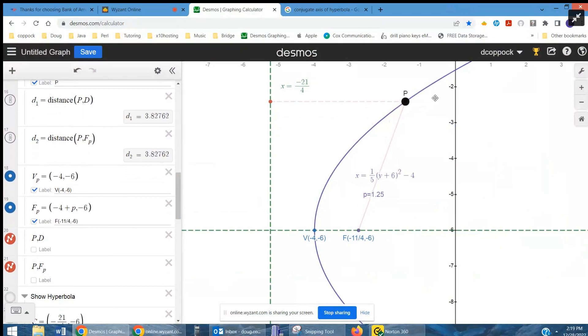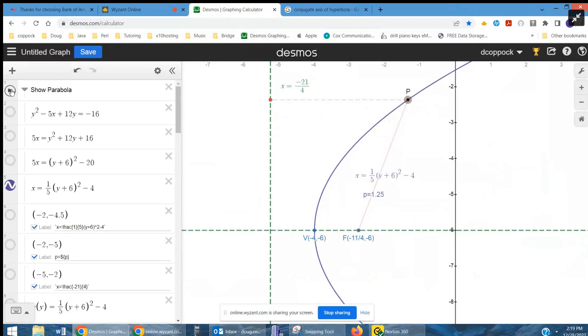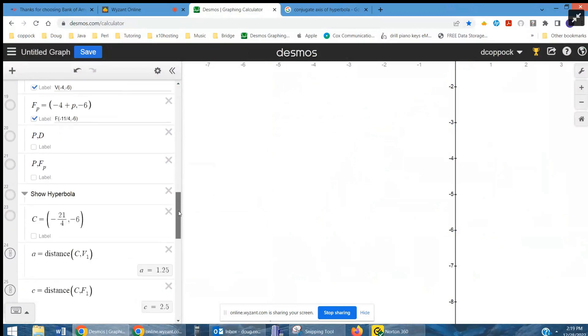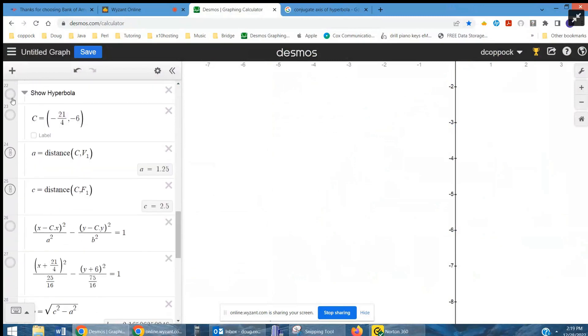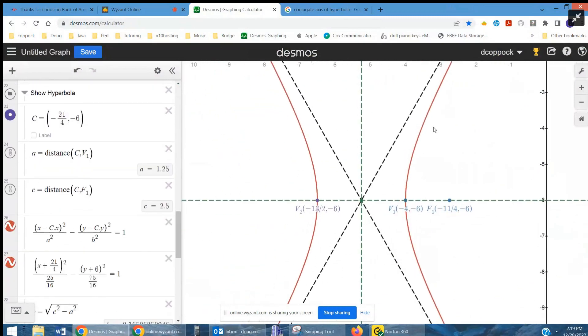So I'm convinced that this is definitely the equation of the parabola, that this is the vertex. This is the focus of the parabola. If I hide the parabola and show the hyperbola, there's what it looks like. Okay, there's the conjugate axis, which was the directrix of the parabola. There's one of the vertices, which was the vertex of the parabola. There's the other vertex.